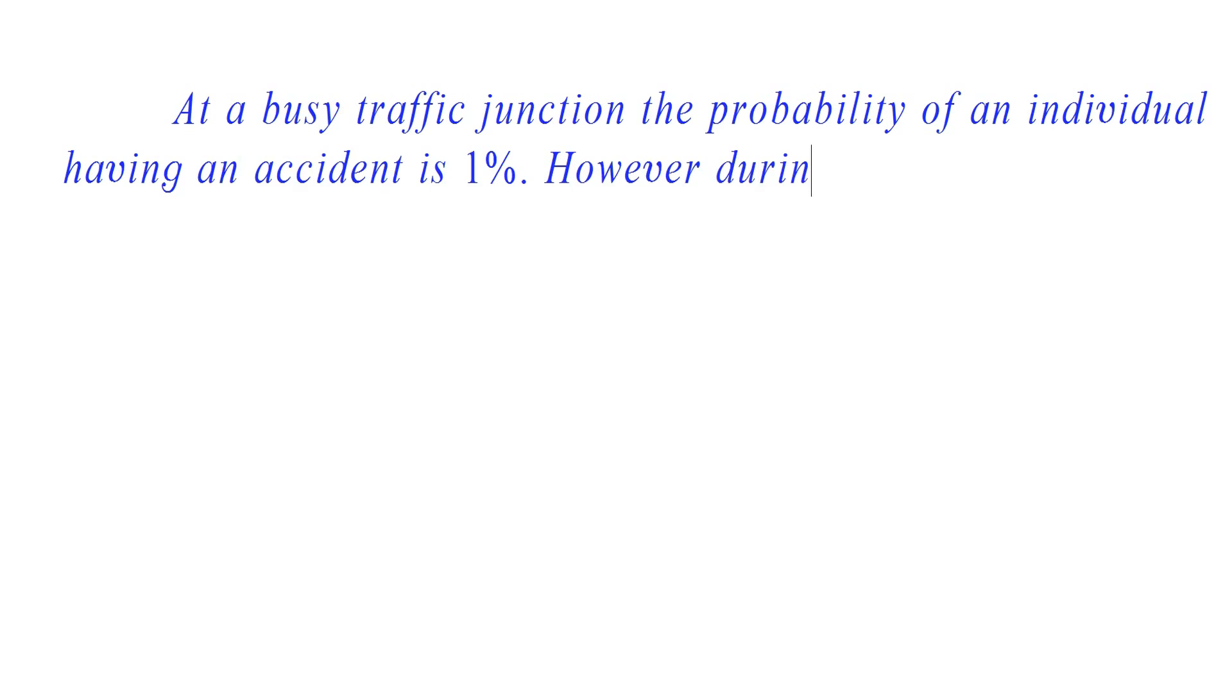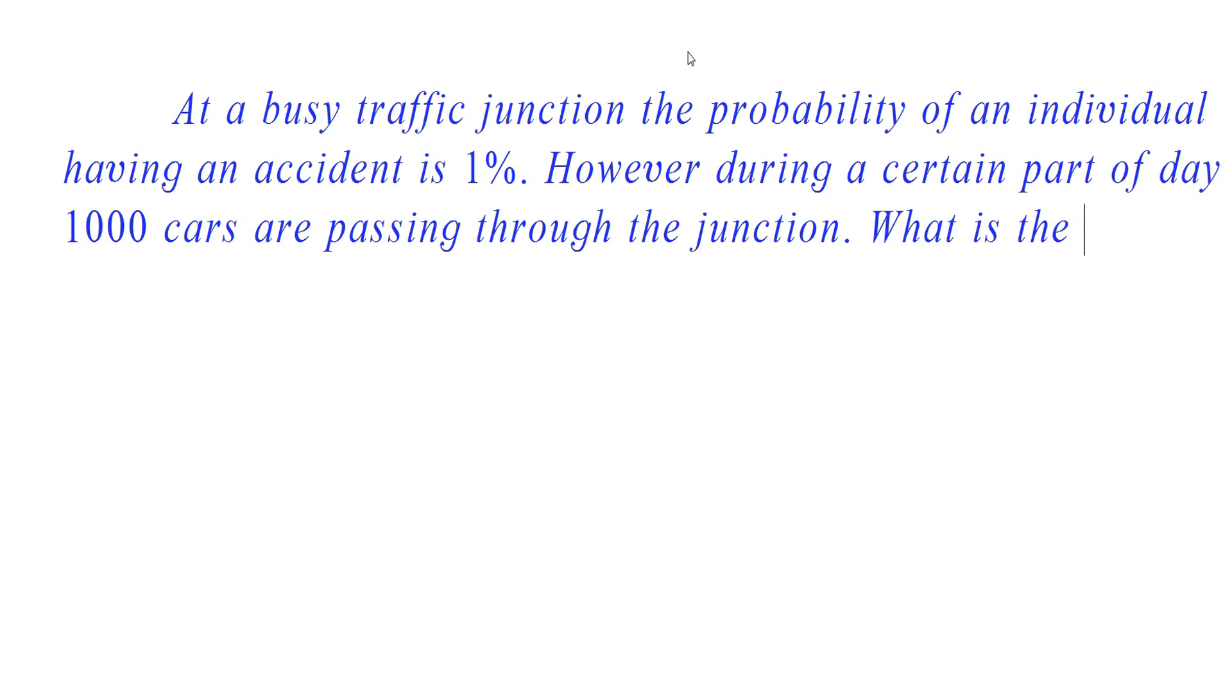Here the question is: at a busy traffic junction, the probability of an individual having an accident is 1%. However, during a certain part of the day, thousand cars are passing through the junction. What is the probability that two or more accidents occur during that period?